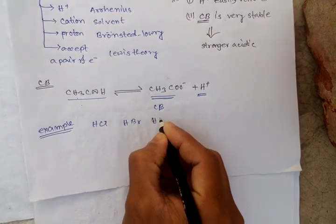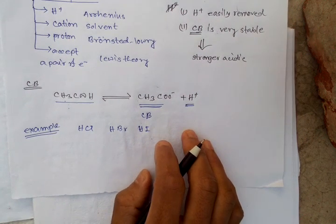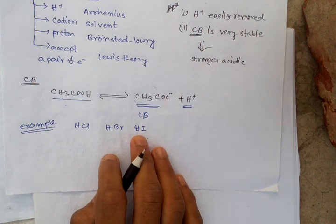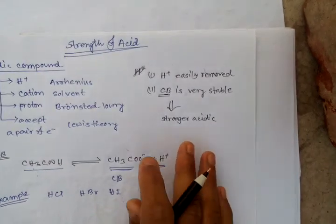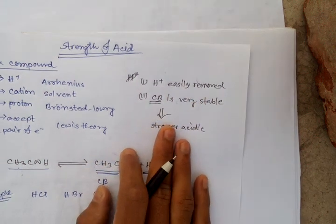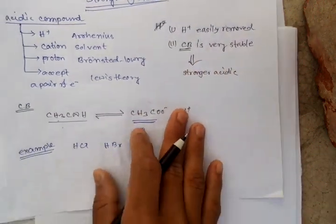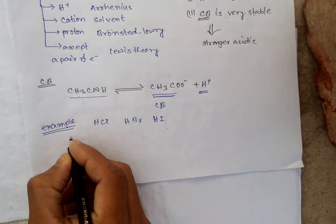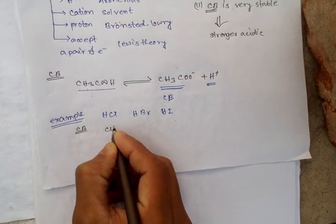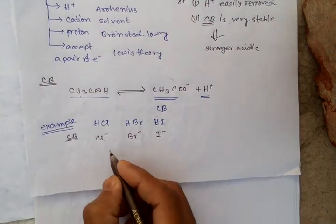Let us take an example: HCl, HBr, HI — these are acids in nature. The question may be asked: arrange the acidity order of these compounds. A compound is more acidic if hydrogen ions are easily removed or if it contains a very stable conjugate base. So first we draw the conjugate bases: Cl⁻, Br⁻, and I⁻. The size is increasing in this order.